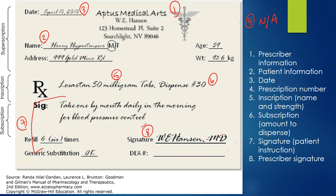For the first component listed, the prescriber information, this will always be located at the very top. You will see the name of the institution and then the address of the hospital or clinic.